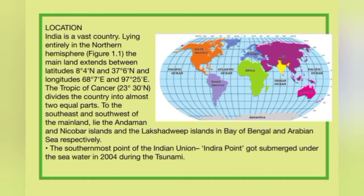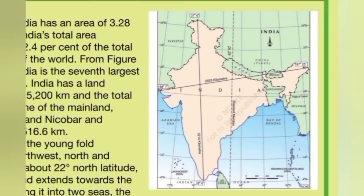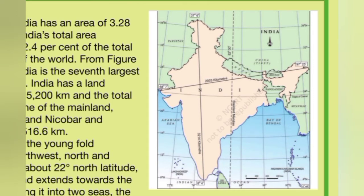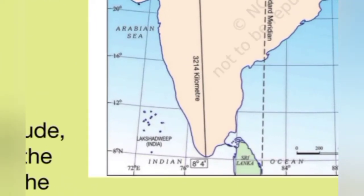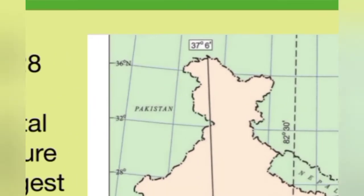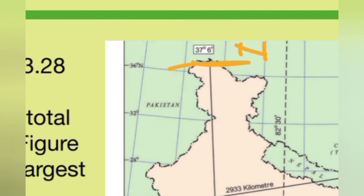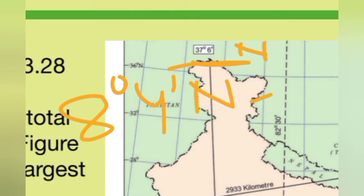We will see India's position on the map. We are talking about the entire mainland. The latitudinal extent — that is, with respect to horizontal lines — defines India's mainland. Since India lies entirely in the Northern Hemisphere, the southernmost point is 8°4' North and the northernmost point is 37°6' North.